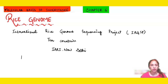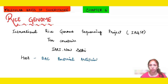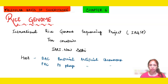The hosts used for studying the rice genome were the Bacterial Artificial Chromosome, or BAC — the same host used in the human genome project. Another host was also used: PAC, which stands for P1 Phage Artificial Chromosome. You need to remember these two host names as they are important.